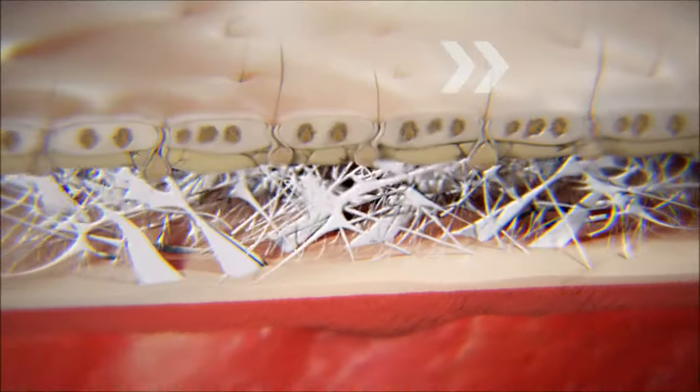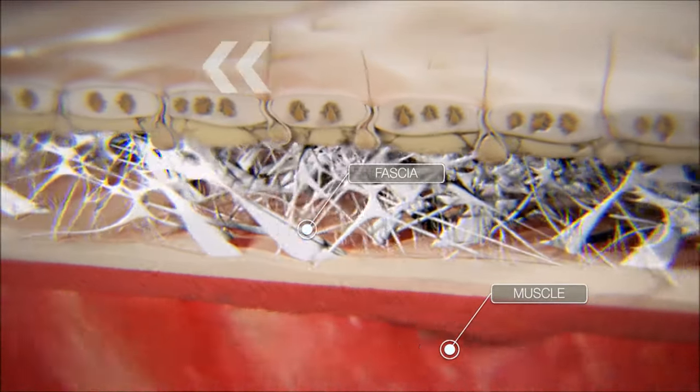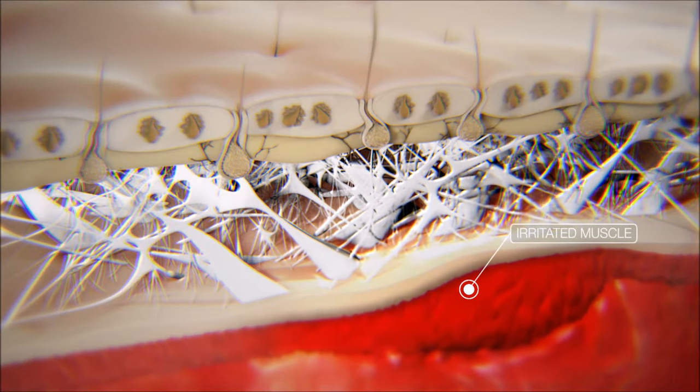In a healthy system, the muscle will slide and move without restriction. When a muscle becomes injured, the rate of collagen production by local fibroblasts is increased.